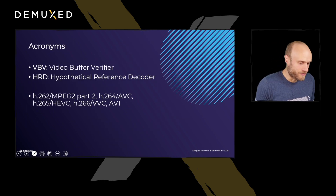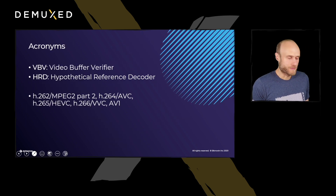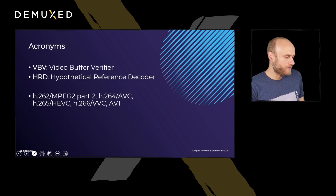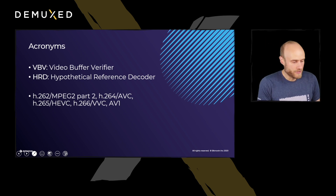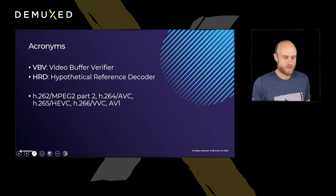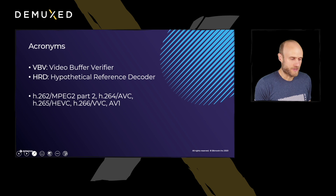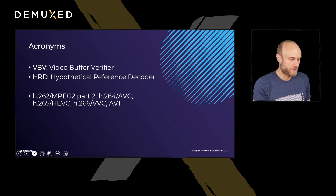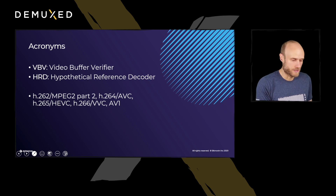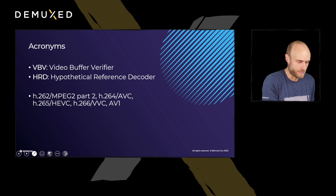First, let's decrypt some acronyms: VBV or HRD. VBV is the Video Buffer Verifier; HRD is the Hypothetical Reference Decoder. For most of this talk, we can just take these as synonyms — they are basically describing the same thing. VBV was first introduced in MPEG-2 and then replaced by HRD in H.264/AVC, which is a little more abstract and a little more detailed.